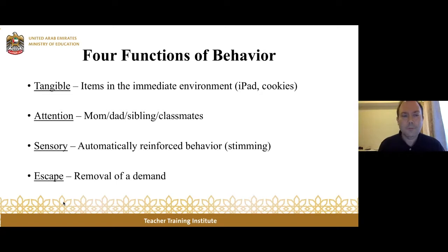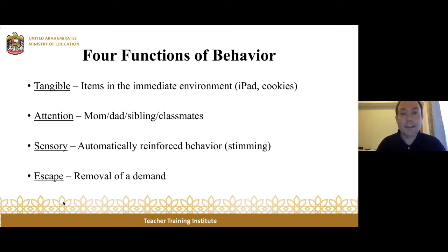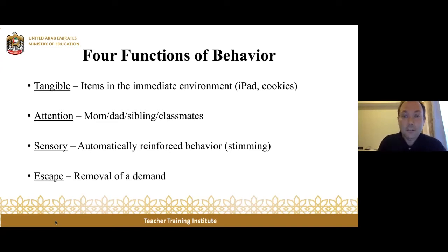When we look at reasons why behaviors occur, there are usually four main reasons — the four functions of behavior. Tangible: when somebody engages in a behavior to get access to something in their immediate environment, like asking for or grabbing an iPad. Attention: a child who wants mom's attention might say 'hey mom,' cry, or engage in problem behavior. Sensory: automatically reinforced behaviors like stimming, listening to music, or watching an iPad. And escape: I don't want to do something, so I do something to avoid it — like flopping on the floor when asked to do chores.